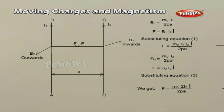Similarly, the magnetic induction due to current I₂ flowing in CD at a distance A acts perpendicular to the plane of the paper and outwards. The conductor AB with current I₁ is situated in this field; the force on a segment of length L of AB due to magnetic field B₂ acts towards the right by Fleming's left-hand rule. These two forces attract each other. Hence, two parallel wires carrying currents in the same direction attract each other, and if they carry currents in opposite directions, they repel each other.